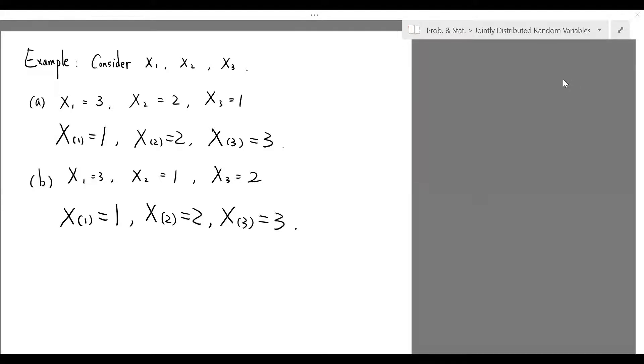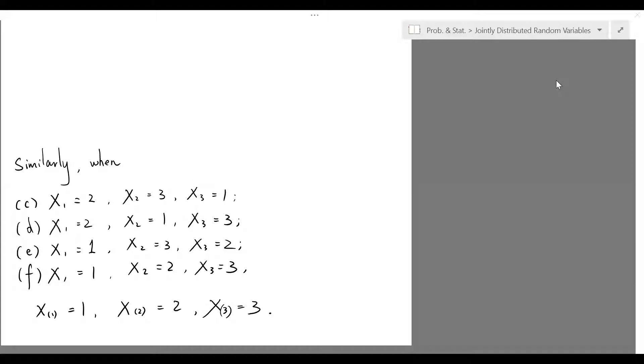Now the question is, how many possibilities can we achieve the same order statistics? For instance, for our order statistics to take upon the values 1, 2, and 3, there are 4 other combinations for the sample values on top of the two that we have discussed.